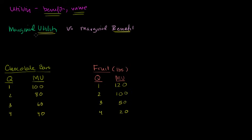In this video, we're going to use the term utility and we're going to come up with a measuring scale — a somewhat arbitrary one. We're going to use that to draw conclusions about the basket of goods someone might purchase depending on different prices. I've pre-written two tables: we're going to talk about chocolate bars and fruit. These tables show the marginal utility of each incremental bar and each incremental pound of fruit.